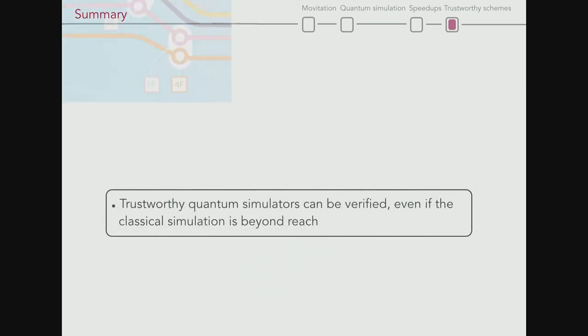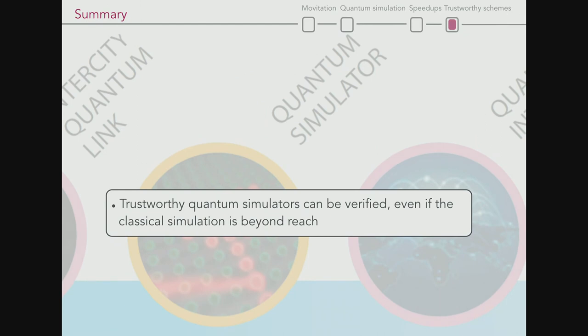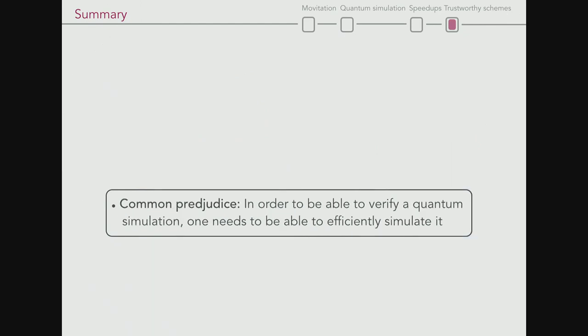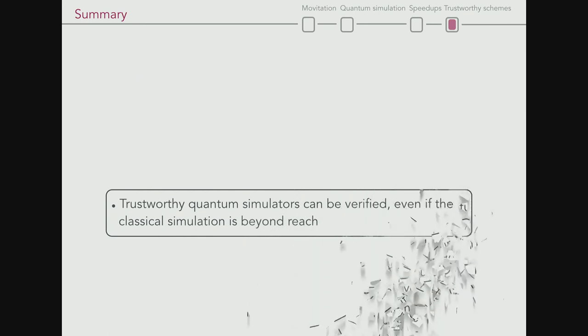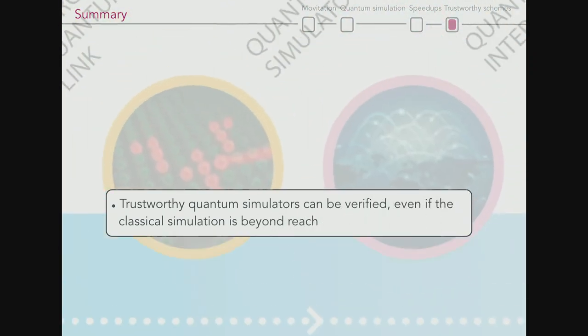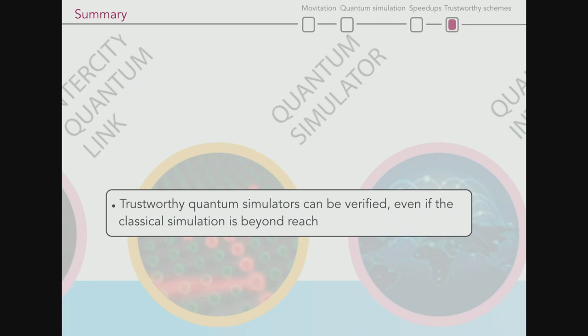There's this prejudice that to verify a quantum simulation, one needs to simulate it efficiently. But this isn't quite true. In delicate settings, a trustworthy quantum simulator can be verified. It's not an NP problem, but you can verify correctness even if classical simulation is beyond reach. I cannot predict what comes out - you have to do the quantum simulation. But you can verify correctness. It's one bit: correct, then you do the simulation. Being able to prove correctness is weaker than making the prediction - an interesting observation, tautologically.